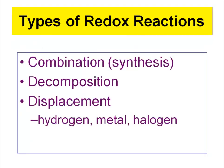There are several types of redox reactions: combination (synthesis) reactions, where two things combine to form one new substance; decomposition reactions, where one thing breaks down into its elements; and displacement reactions — involving hydrogen, metals, or halogens. Any of those three types can be considered redox reactions.